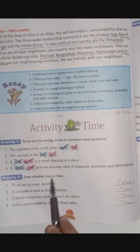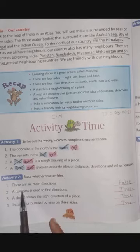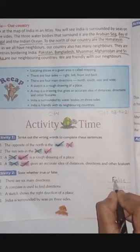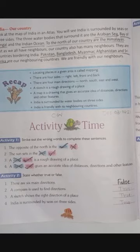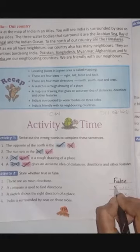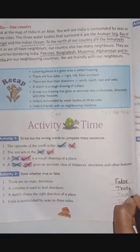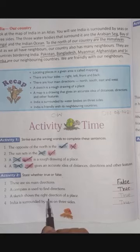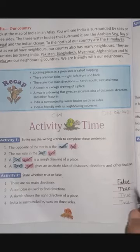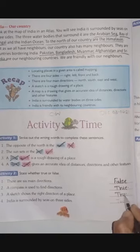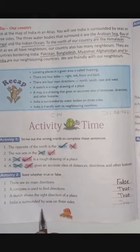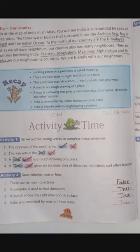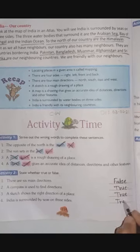Activity number 2: State whether true or false. There are six main directions — it is false. A compass is used to find direction — true. A sketch shows the right direction of a place — true, sketch right direction दिखाती है। India is surrounded by sea on three sides — true, तीनों तरफ से महासागरों से घिरा हुआ है।